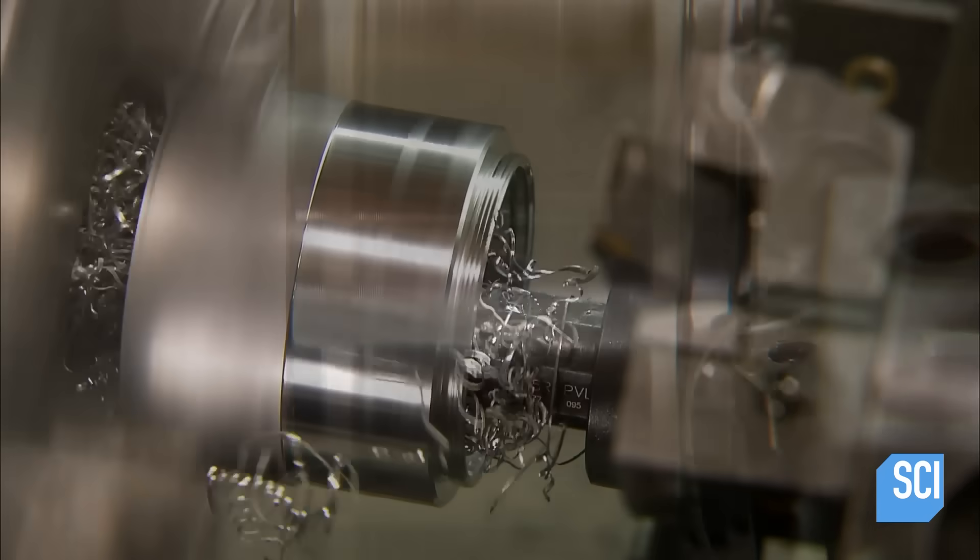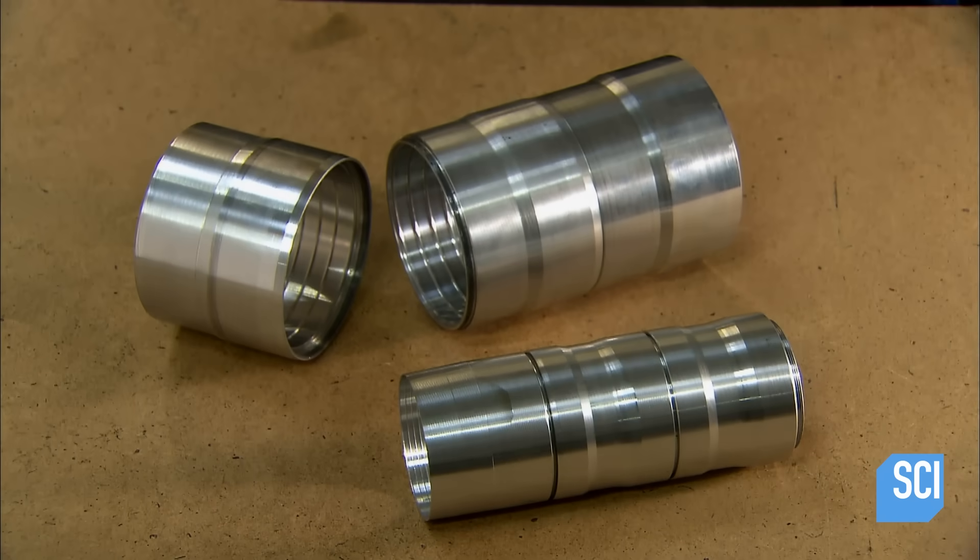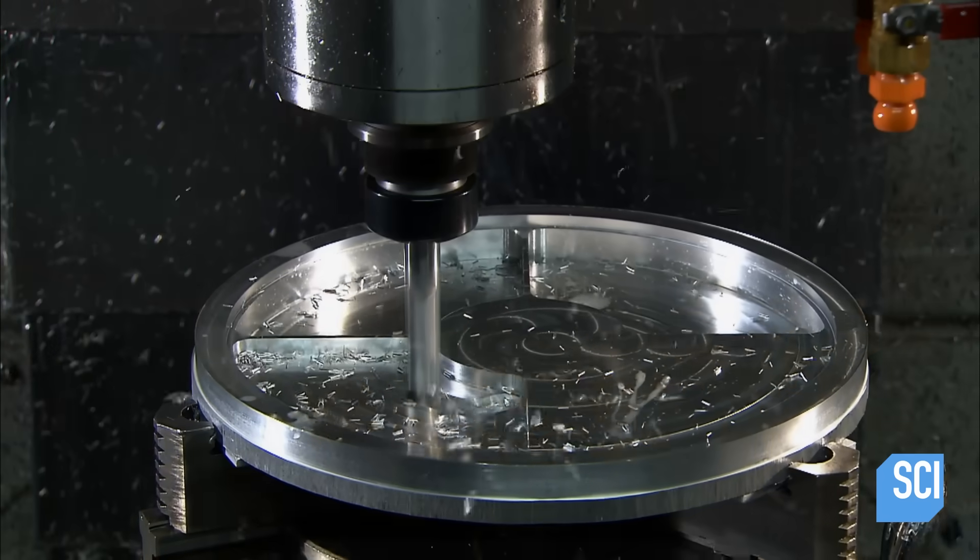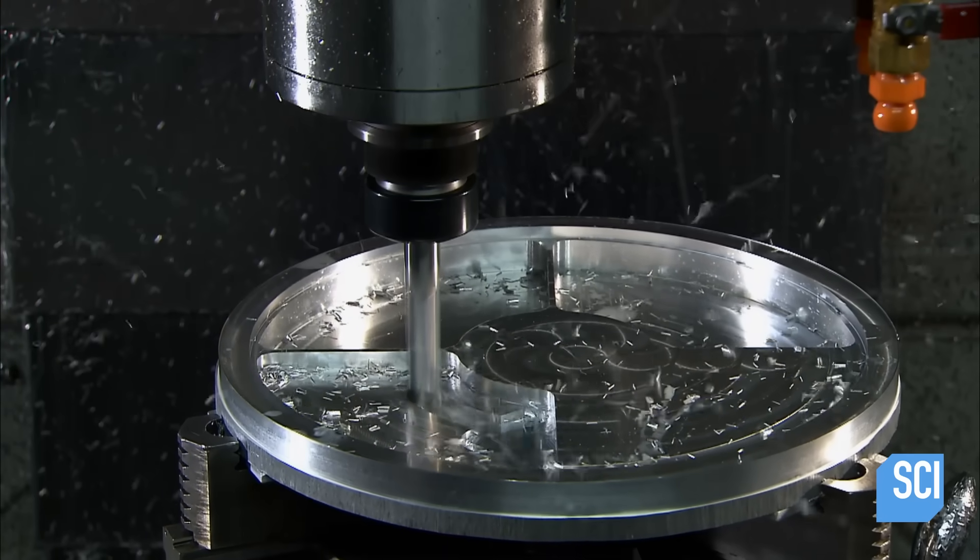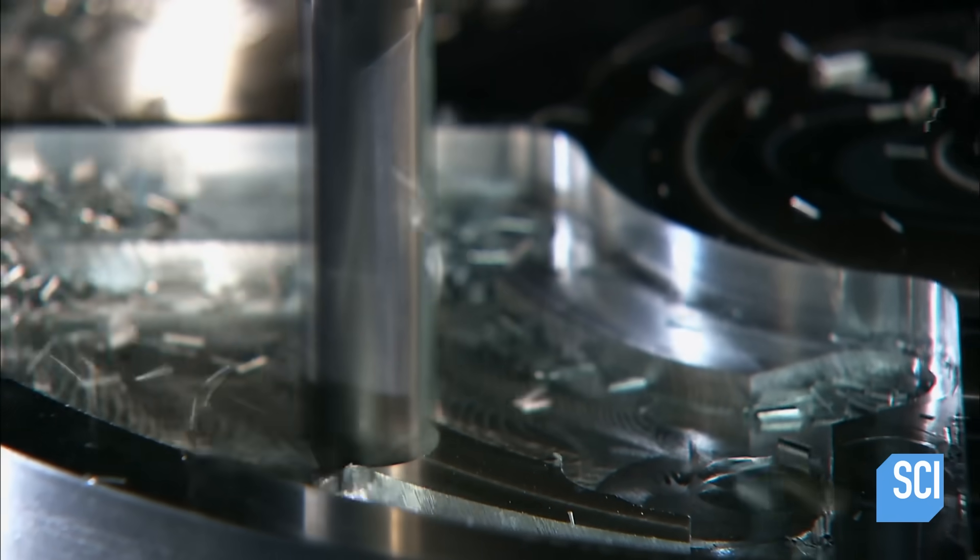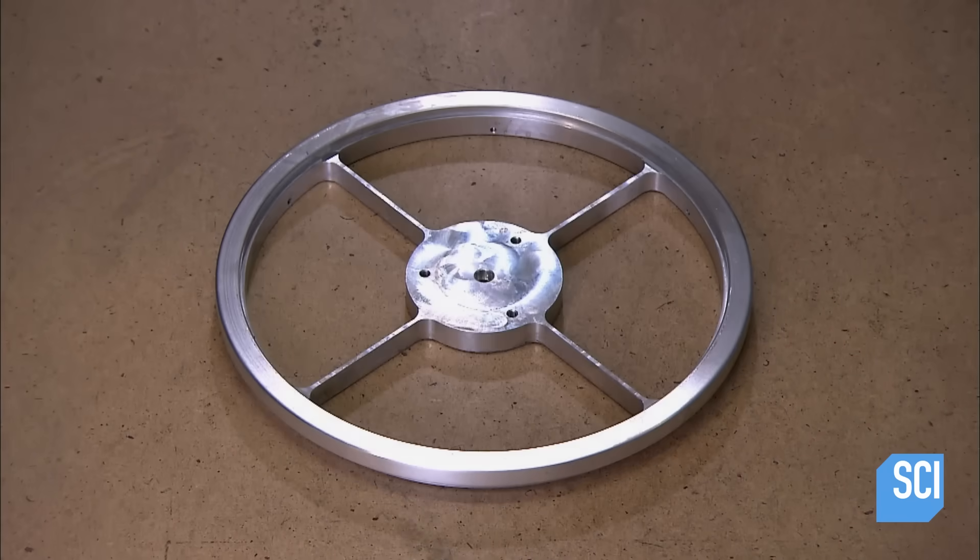Production begins with the machining of cylindrical metal parts. These are baffles, and when screwed together, they'll block stray light that would interfere with the telescope's operation. More tools transform a solid aluminum disc into a ring with spokes. This part, called the spider, is a framework for supporting the telescope's secondary mirror.